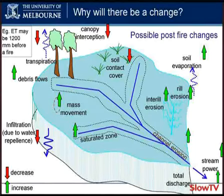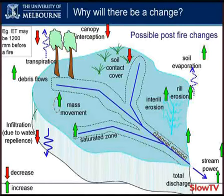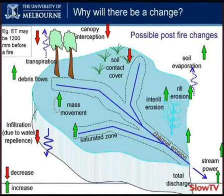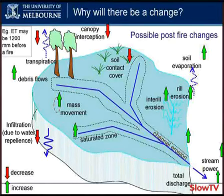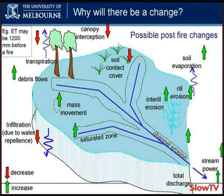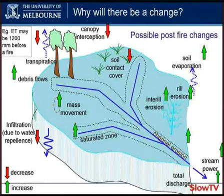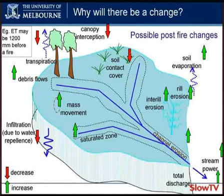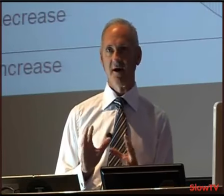This is a schematic of the processes that occur on a hill slope or a catchment — and I'm talking about forested catchments here — that control how water, sediments, nutrients, etc. move around on those hill slopes. You don't really need to get too fixated on all the various components, but you'll notice there are some arrows. The red ones denote a decrease in the rate of that process, and the green ones an increase. The main message is that a lot of processes change after a fire — it's the biggest impact you can apply to a forest.